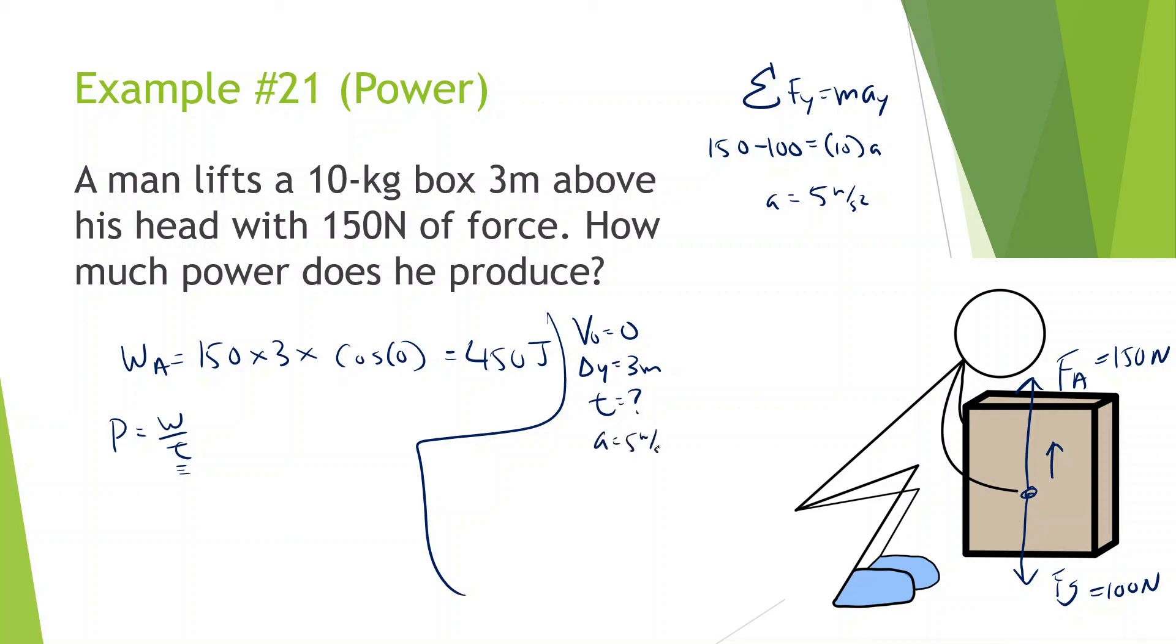So now we know acceleration is 5 meters per second squared. Let's see if we could try to find this time. We're going to do displacement in the y equals V initial t plus 1 half a t squared. So this is going to be 3 equals 0 plus 1 half times 5 t squared. Let's do some algebra. 3 times 2 divided by 5, square root, t is equal to 1.1 seconds.